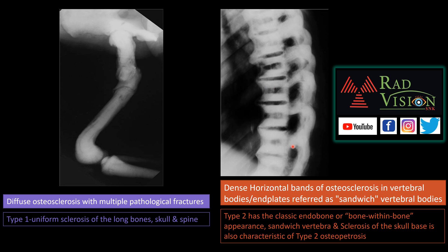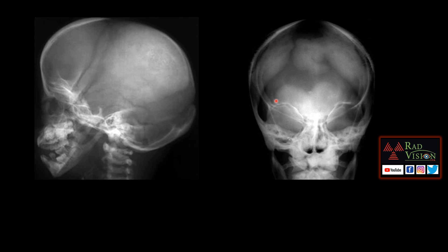There are two types of osteopetrosis: Type 1 shows uniform sclerosis of the long bones, and Type 2 shows the classical endosteal bone-in-bone appearance or sandwich vertebra, as seen in this case.